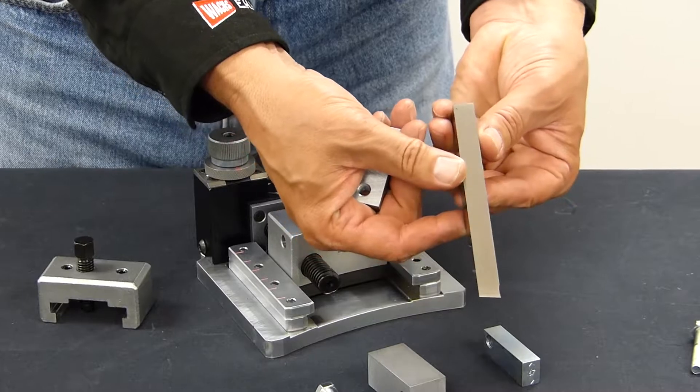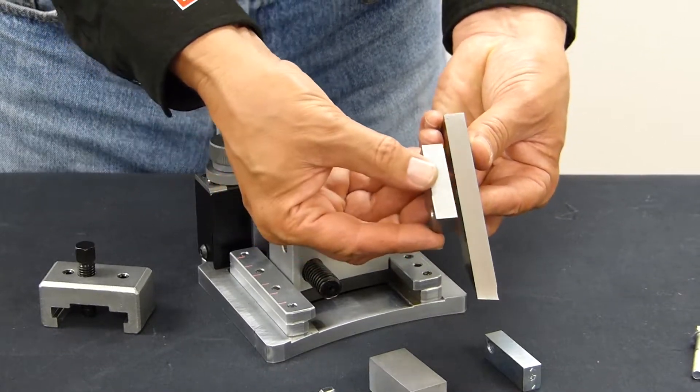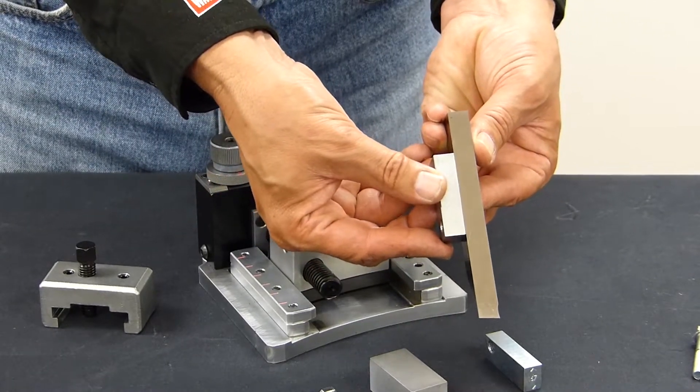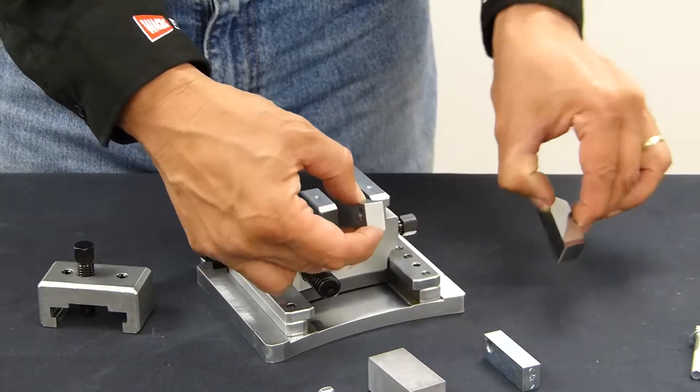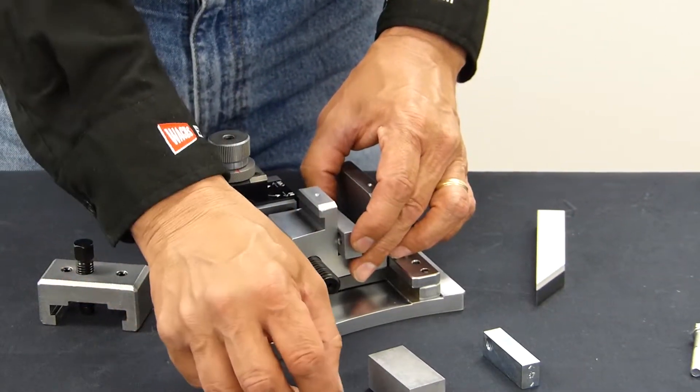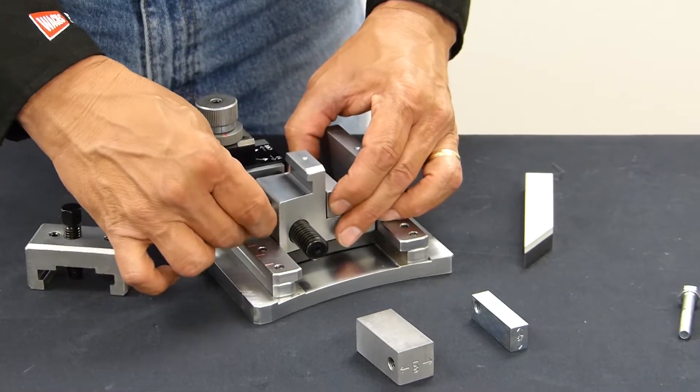The legacy tooling is half an inch wide and the block is half an inch. And together they fit in the pocket, which is one inch. Put the spacer in, secure it with the screw.